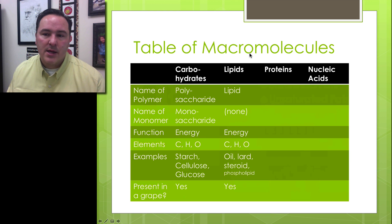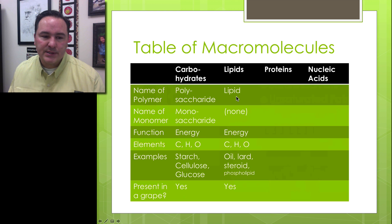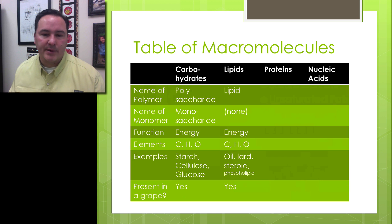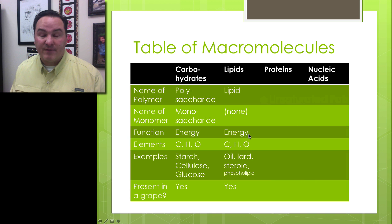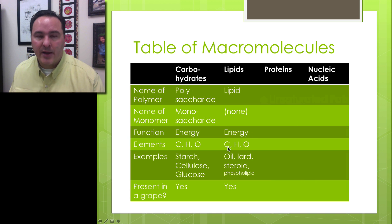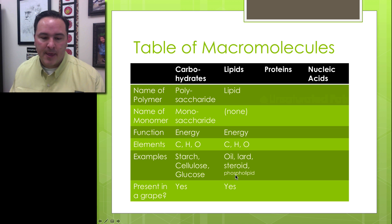Coming back to our table of macromolecules: for lipids, the name of the structure is simply a lipid — there's no distinct monomer. The function is mostly energy. It's also made up of carbon, hydrogen, and oxygen. Examples include oil, lard, steroids, and phospholipids. Is it present in a grape? Yes.